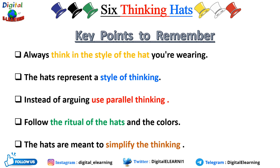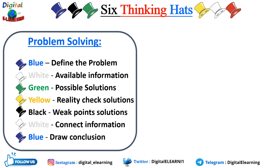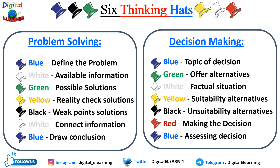For a problem-solving situation, you can use this sequence: start with the blue hat to define the problem, the white hat to look at all available information, the green hat to look at all possible solutions, the yellow hat to reality-check whether the solution is working, the black hat to identify weak points, the white hat again to connect all the information, and finally the blue hat to draw a conclusion. For a decision-making problem: the blue hat defines the topic, the green hat looks at alternatives, the white hat looks at factual situations, the yellow hat assesses suitability, the black hat assesses unsuitability, the red hat makes the decision, and the blue hat assesses the decision.